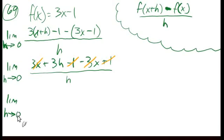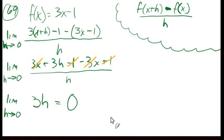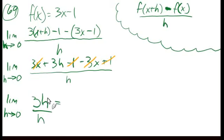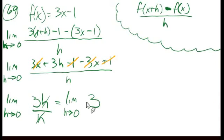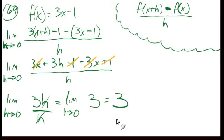So we have the limit as h approaches 0 of 3h over h. The h's cancel, giving the limit as h approaches 0 of 3. What happens when you plug h in here? There's no h — nothing happens. It's just 3. This function is always 3. That's one of the properties of limits: the limit of a constant is just that constant.